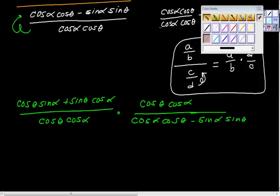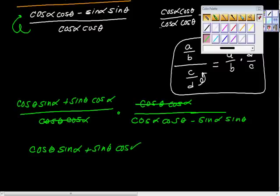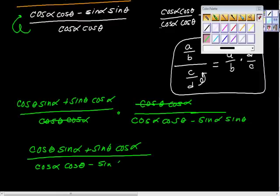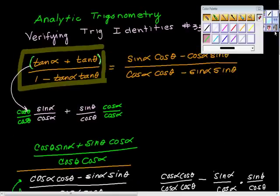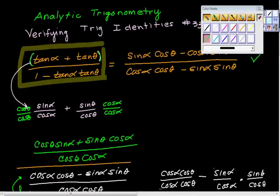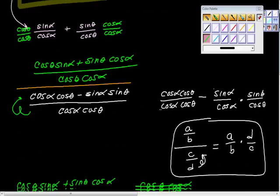And it looks like hell, but we're there, man, we got this done, because look, these cancel. And we end up with cosine theta sine alpha plus sine theta cosine alpha, all over cosine alpha cosine theta minus sine alpha sine theta. Wow, right? But look, this is what we promised ourselves. And there it is.